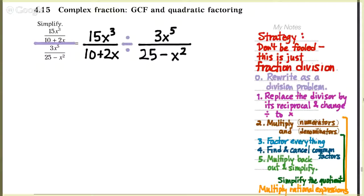So now, how do we divide these rational expressions? Every division problem is a multiplication problem in disguise. Replace the divisor by its reciprocal and change division to multiplication — flip and multiply is the shorthand for that.